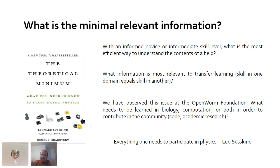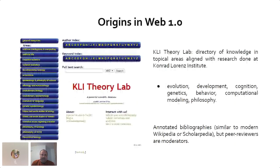Susskind's book addresses different issues and gives you everything you need to know to be conversant in physics, teaching undergraduate physics content in a self-educated way. I work for the OpenWorm Foundation, and we've observed this very issue: people come in with heavy computer science skills or mostly biological skills, and they need to understand a bit of both. We need a more systematic way to do this.